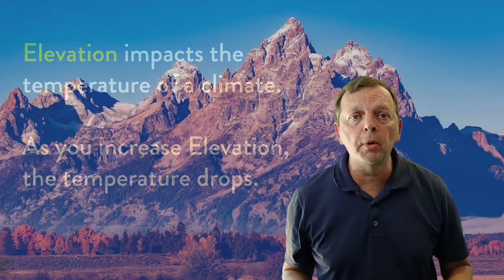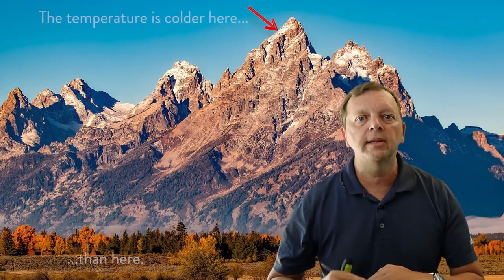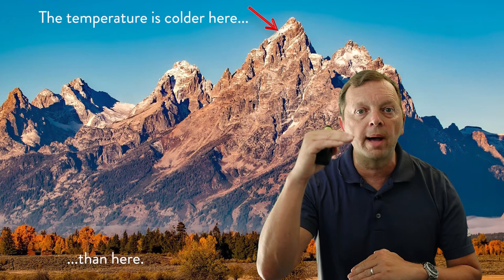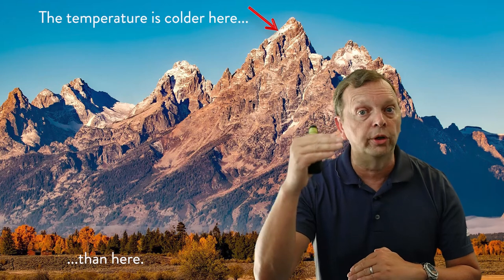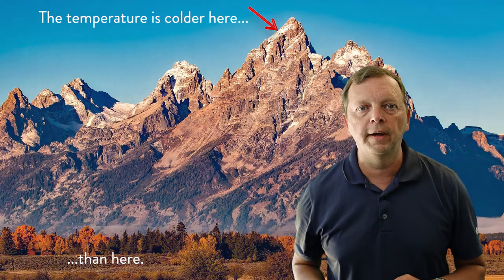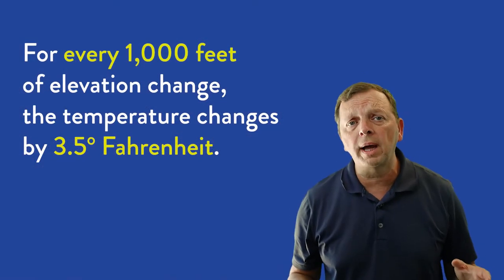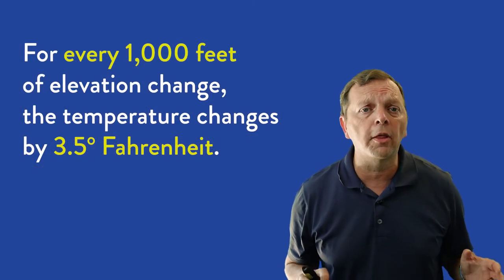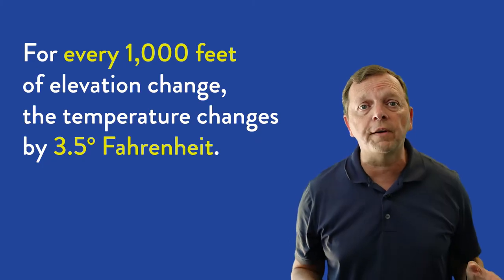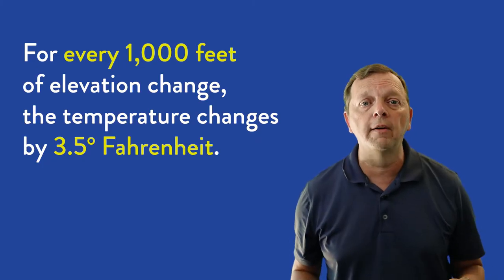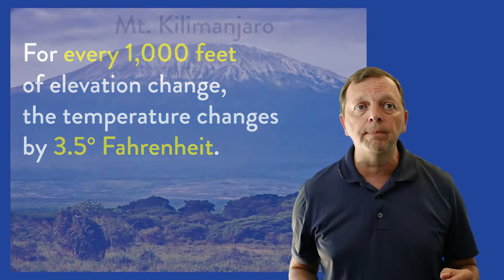To make this easy to remember, think of a mountain. Where do you usually find snow on a mountain? It's at the top. Why? Because at the top of a mountain, it's colder — it has more elevation. On its own, elevation will impact temperature by about three and a half degrees Fahrenheit for every thousand feet.